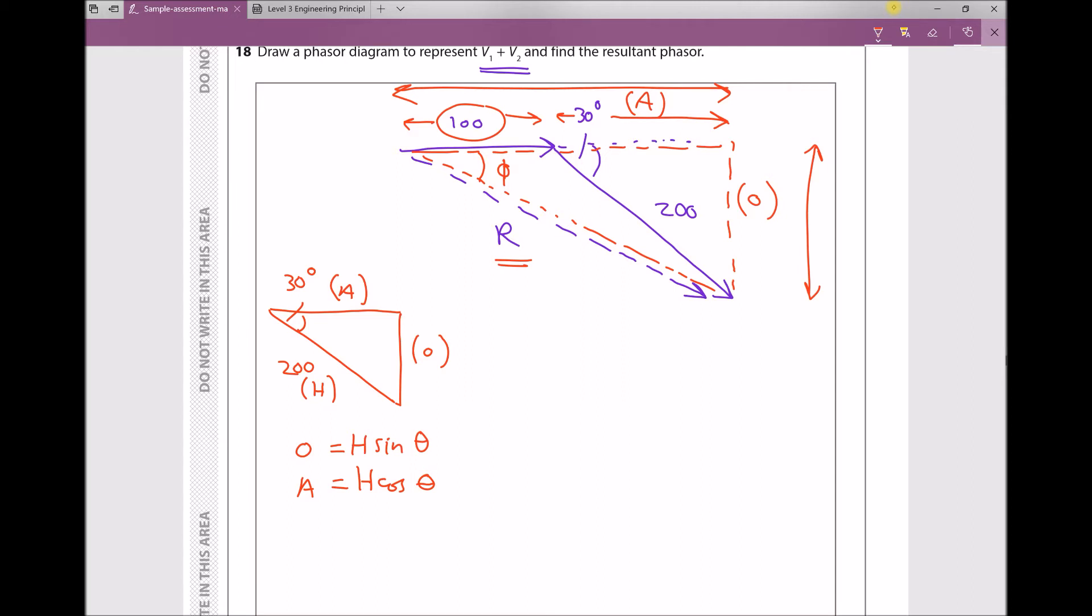Calculating these: the opposite is 200 sin(30°) = 100, and the adjacent is 200 cos(30°) = 173.2.